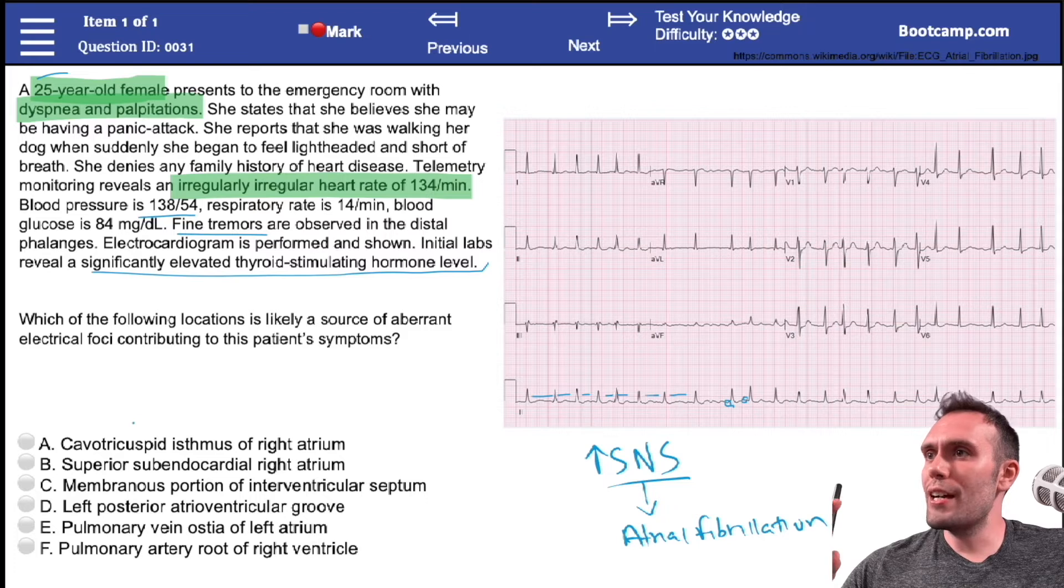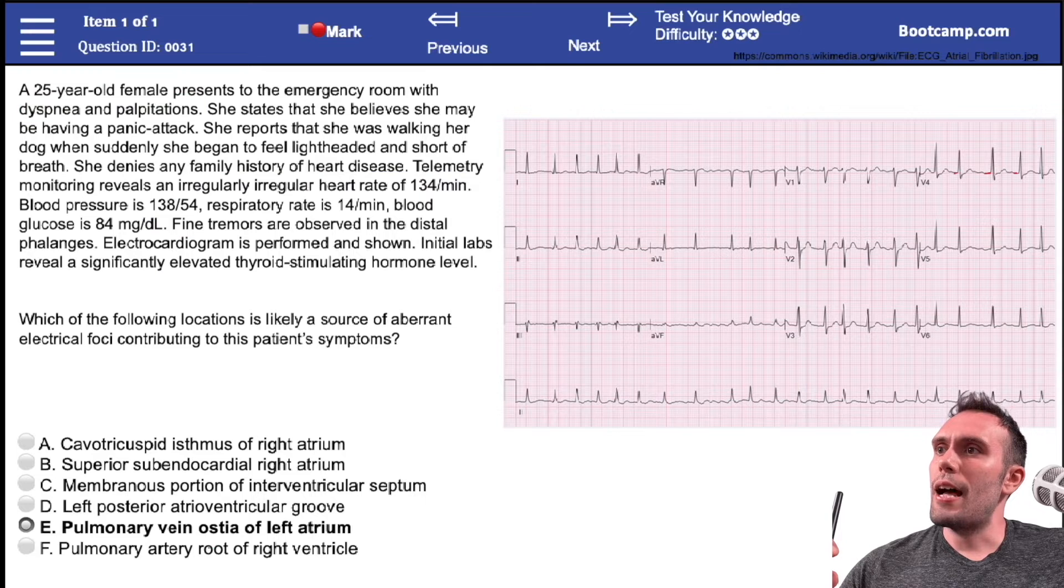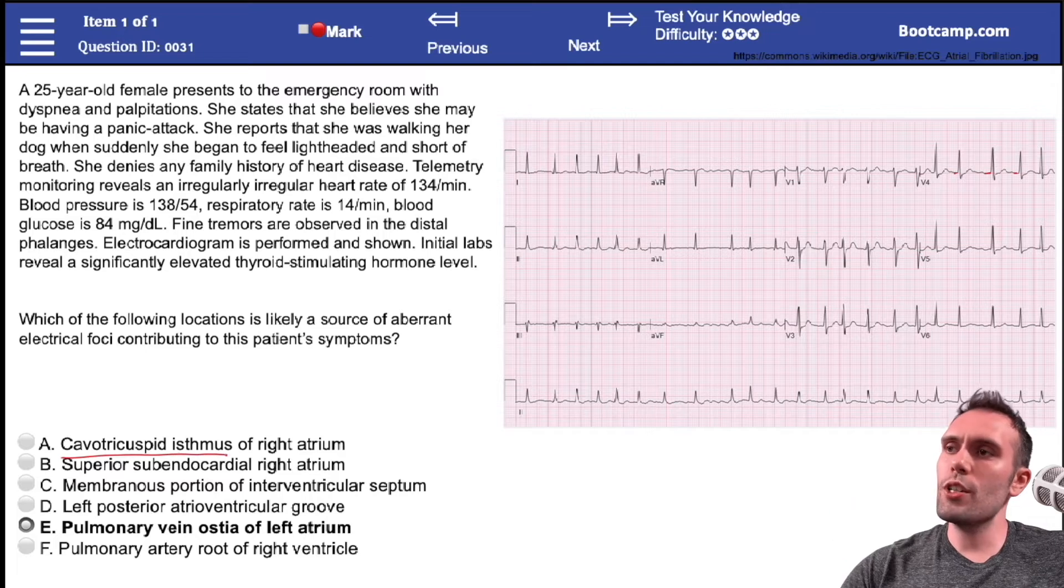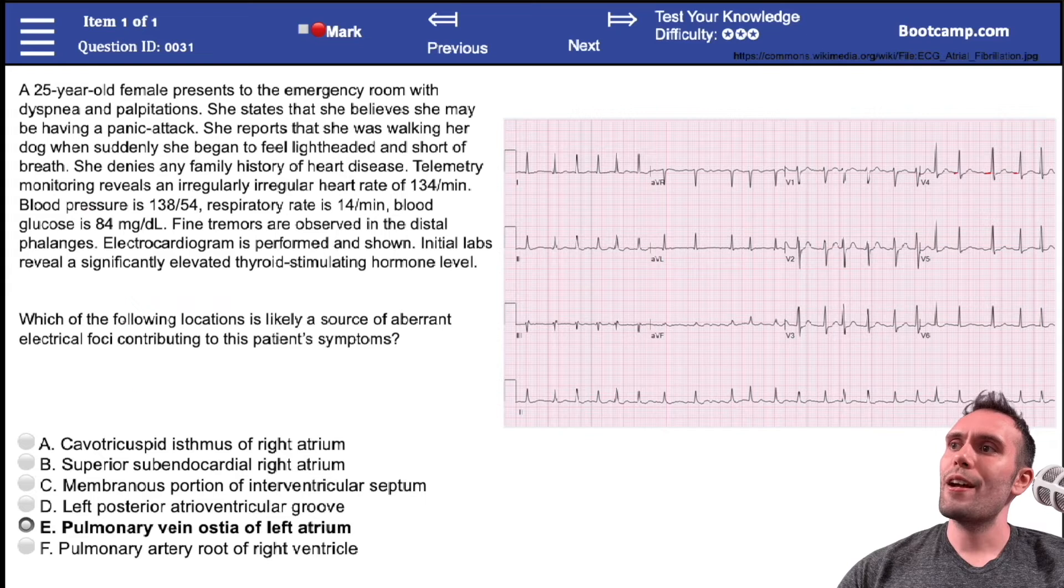I forgot to click to the next slide, so I'm leaving you guys in suspense here. Let's skip to the next slide and see what the answer is. The first option A, the cavotricuspid isthmus - this is kind of a complex name. Usually when you get these weirder terms they're usually not the right answer in board questions.